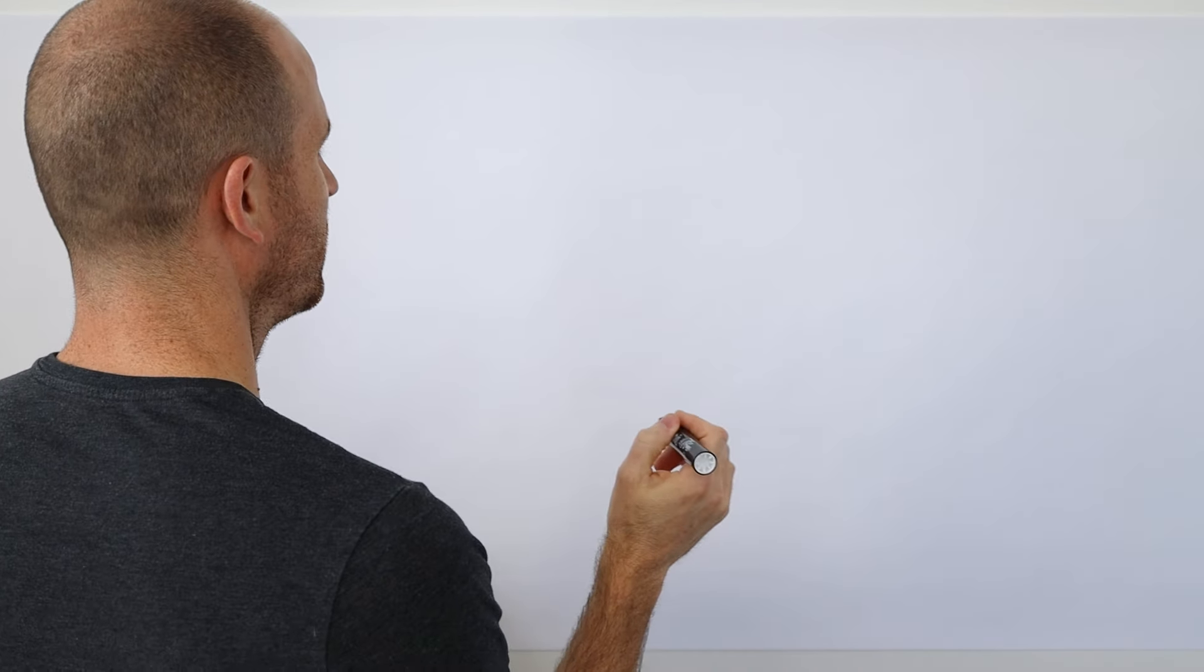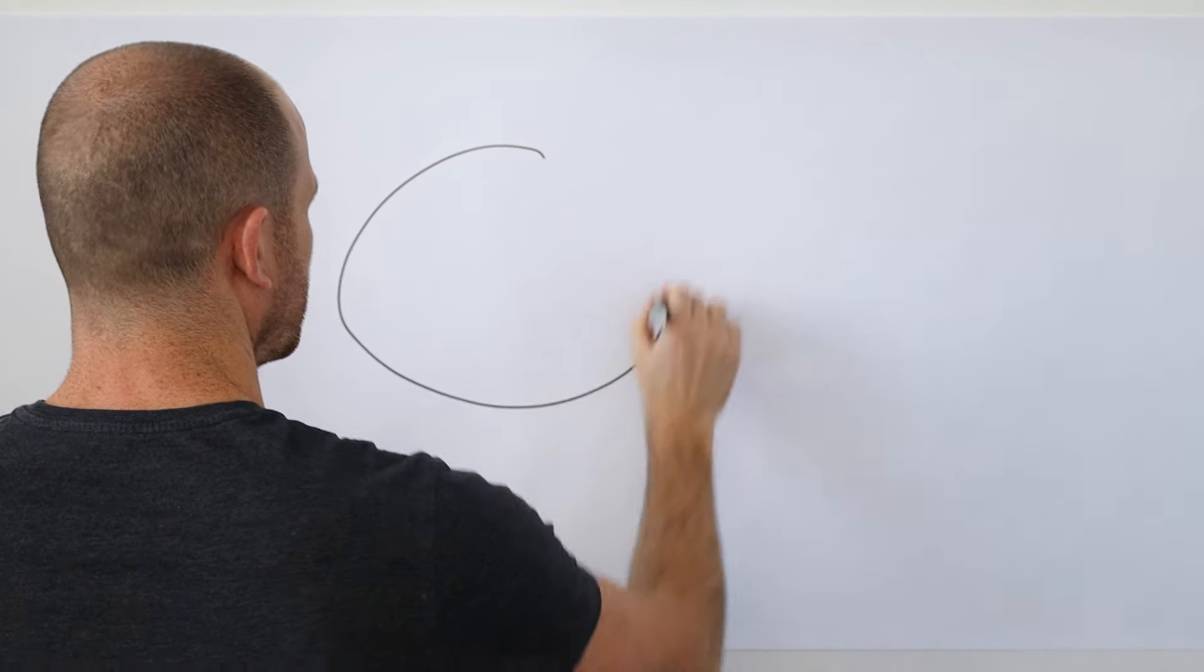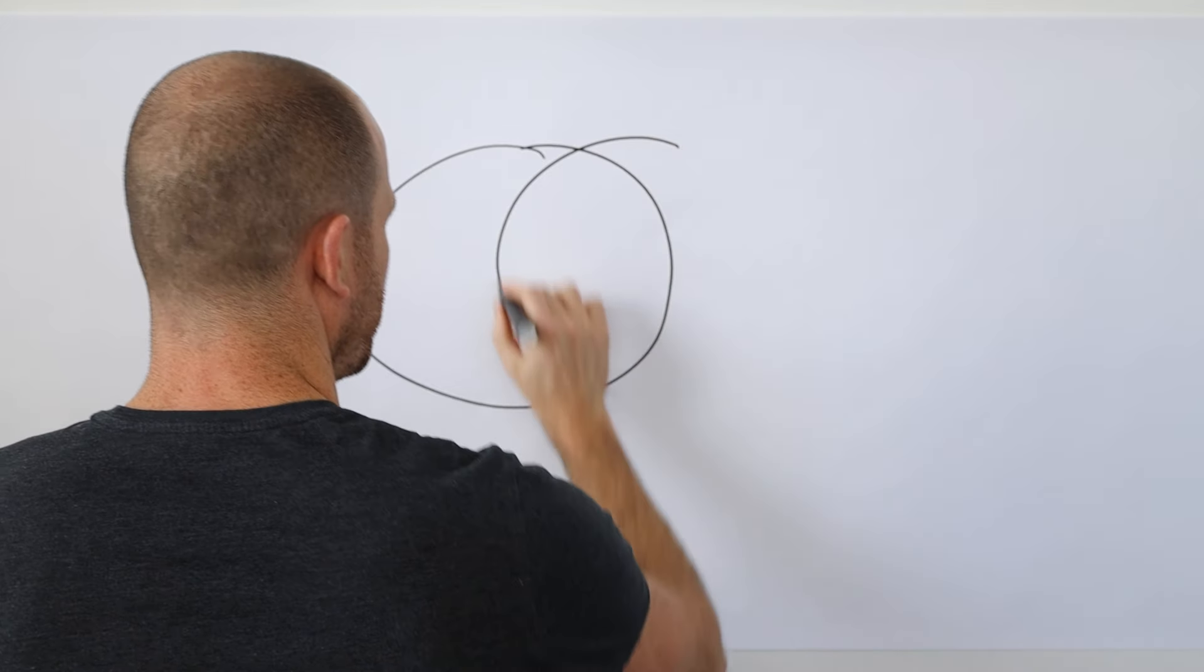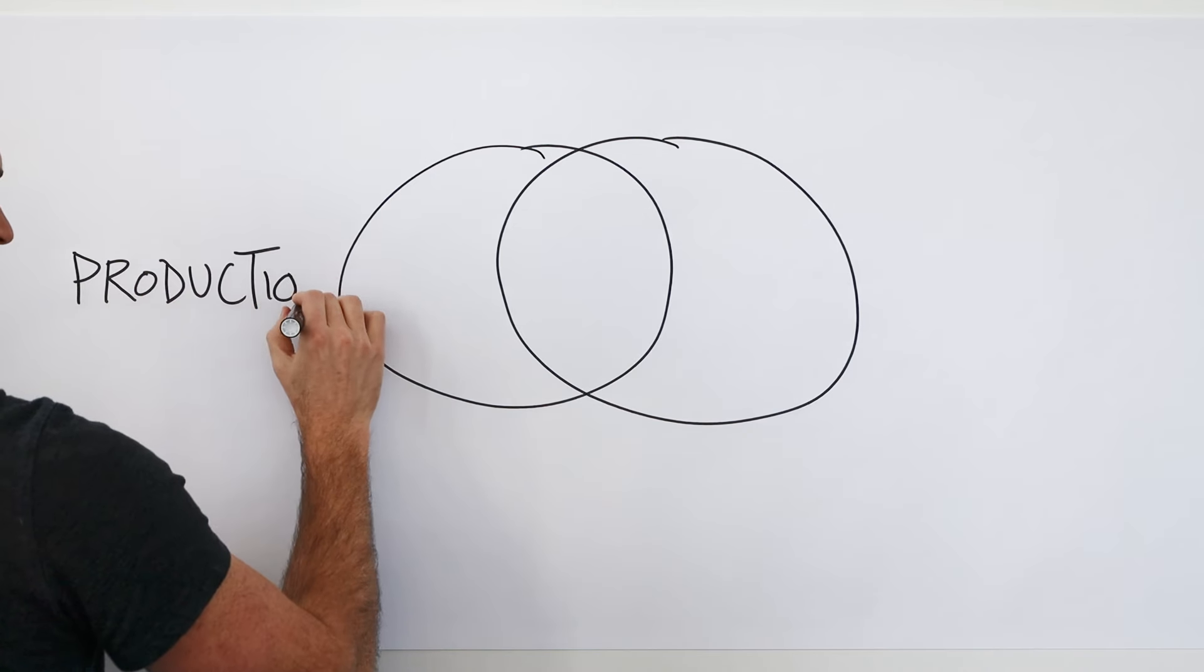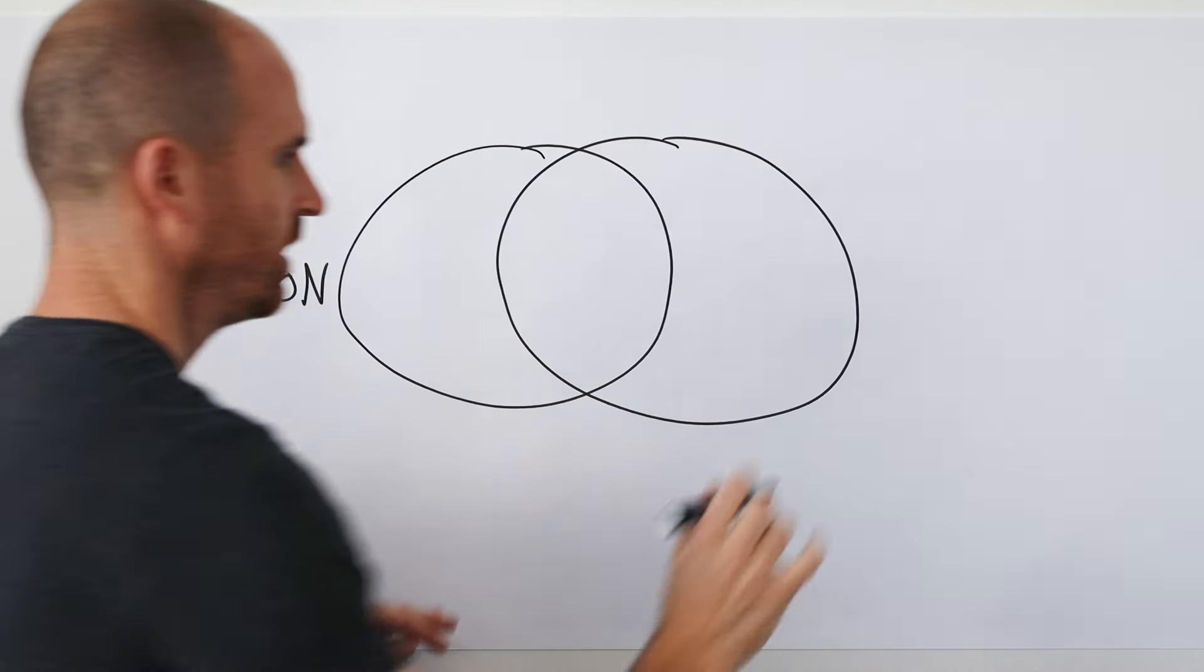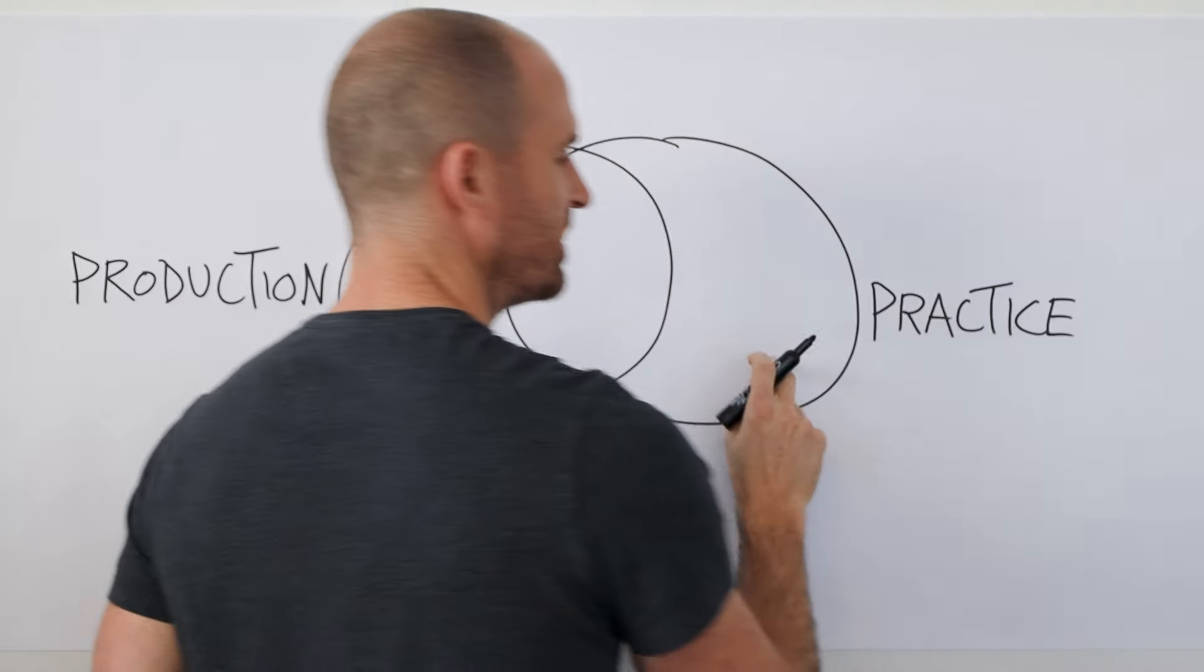Today I want to explore that space, that tension, by sketching out a simple little diagram here, specifically a Venn diagram, where we've got production represented by this circle, and practice represented by this one.